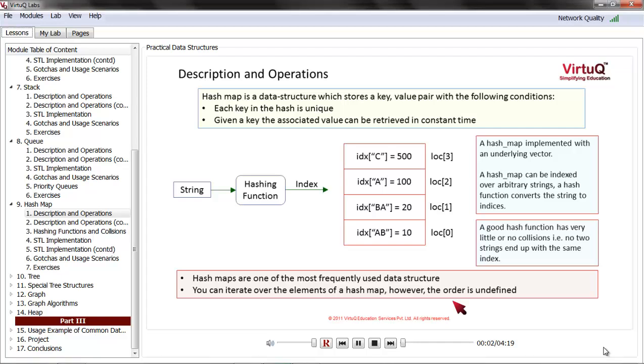A hash map is a very interesting data structure. A hash map is a data structure which stores a key-value pair. It has two conditions which must be taken care of: each key in the hash is unique, and given a key, the associated value can be retrieved in constant time.